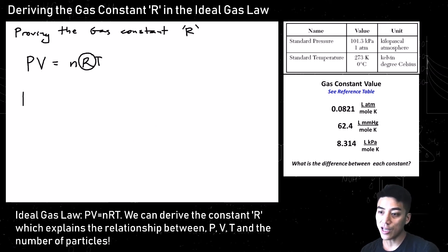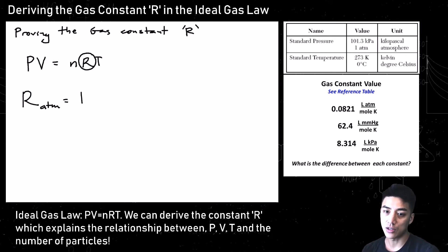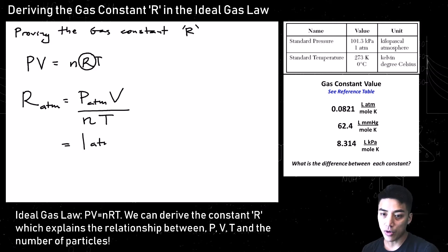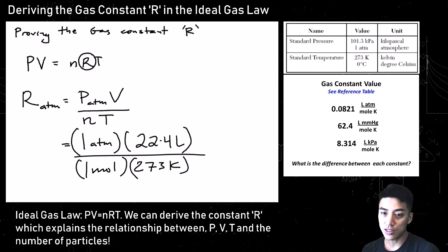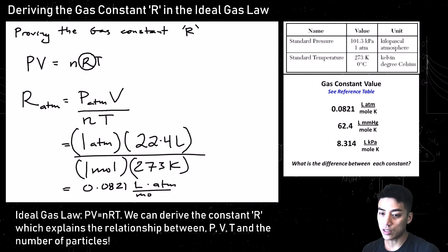The gas constant is always provided in a reference table, but I want to prove R so you understand it rather than just memorize it. Now we'll prove R in terms of atmospheres. Isolate for R — it's PV over nT. Plug in standard pressure of 1 atmosphere, volume of 22.4 liters per 1 mole of gas, and 273 Kelvin for standard temperature. You get 0.0821 liters times atmospheres over mole K. Those four units remain, and that's the gas constant for atmospheres.